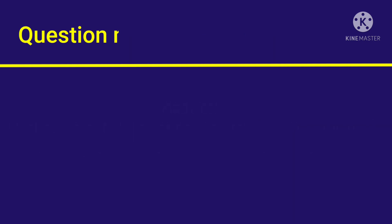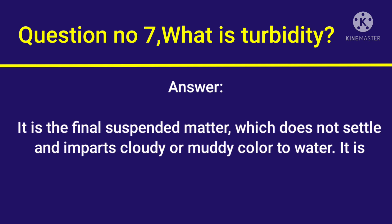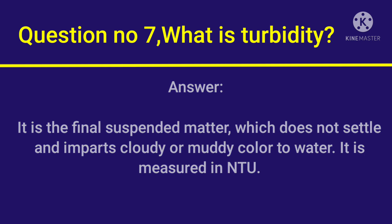Question number 7: What is turbidity? Answer: It is the final suspended matter which does not settle and imparts a cloudy or muddy color to water. It is measured in NTU.